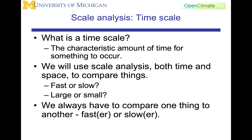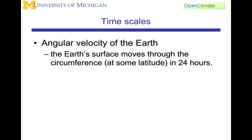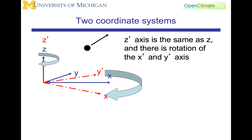Without scale analysis, it's very difficult to take on the full equations of motion and solve them. We saw in earlier lectures the importance of the Earth's rotation to motions on the planet. A natural time scale for considering meteorological and oceanographic dynamics is therefore the time scale of the Earth's rotation. Earlier in the course, we introduced the idea of rotating coordinate systems, and in particular, a tangential Cartesian coordinate system rotating on the surface of the Earth.